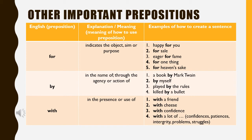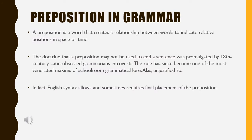Preposition 'by' is used in the name of, or through the agency or action of — examples: a book by Mark Twain, by myself, played by the rule, killed by a bullet. Lastly, preposition 'with' is used to indicate the presence or use of something — examples: with a friend, with cheese, with confidence, with a lot of patience, integrity, problem, struggle.